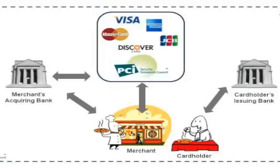This bank is called an issuing bank because it issued the credit card. The issuing bank agrees to comply with the regulations of the card brands, including PCI data security standards.